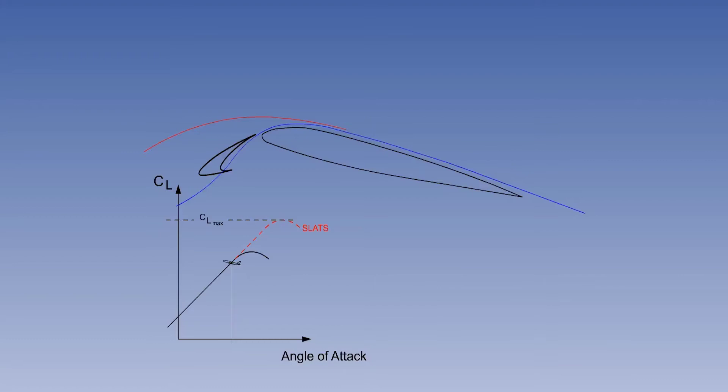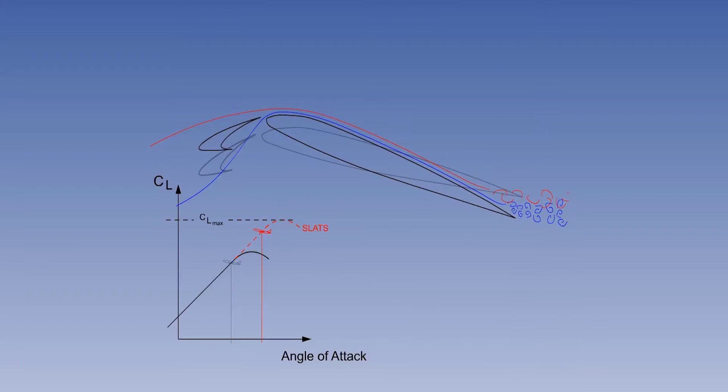Slats increase CL max by increasing the boundary layer kinetic energy. This merely extends the lift curve. If a constant angle of attack is maintained, the lift coefficient of the aircraft will remain the same, and there will be no operational change. For the aircraft to benefit from slats, the pilot must fly the aircraft at a higher angle of attack — a higher nose attitude.